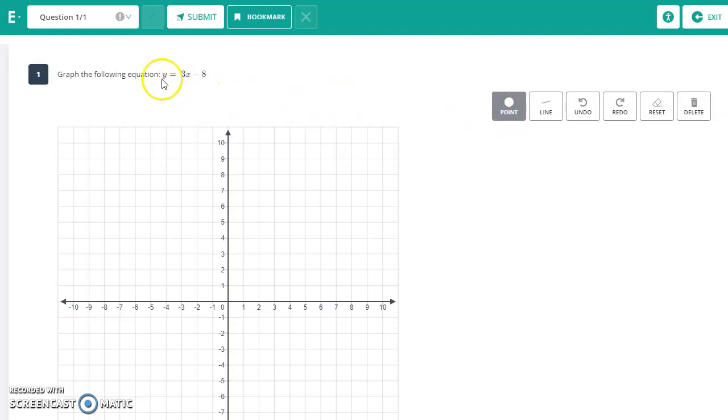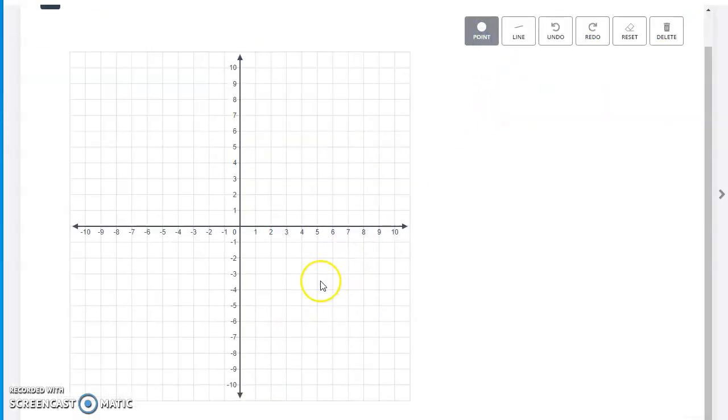To graph a function such as y equals 3x minus 8, there's two ways to go about this. You can select the point option and simply go to your y-intercept, up 3 over 1, then selecting the line and clicking on your two points. It will create a line answering the question correctly.